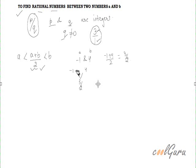3 by 2 is between minus 1 and 4 and it is a rational number. Now suppose I have to find 3 rational numbers between minus 1 and 4. So I can repeat this formula for these two numbers. I can find a number which is between minus 1 and 3 by 2, and again between 4 and 3 by 2.